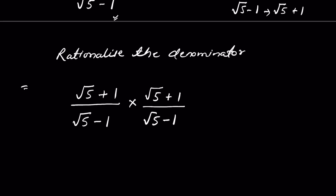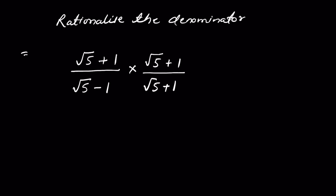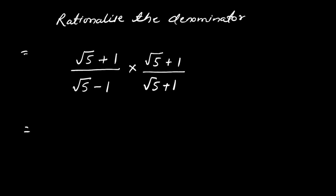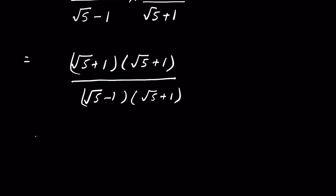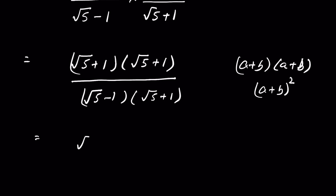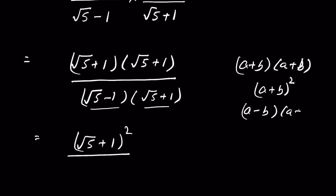The conjugate is square root of 5 plus 1, so we multiply and divide by square root of 5 plus 1. In the numerator we have square root of 5 plus 1 times square root of 5 plus 1, which is in the form of a plus b whole square. In the denominator we have square root of 5 minus 1 times square root of 5 plus 1, which is in the form of a minus b times a plus b — a difference of squares — so we write it as a squared minus b squared.